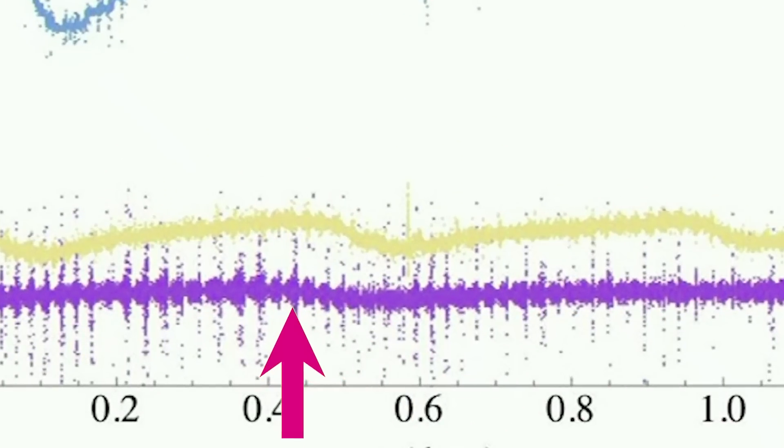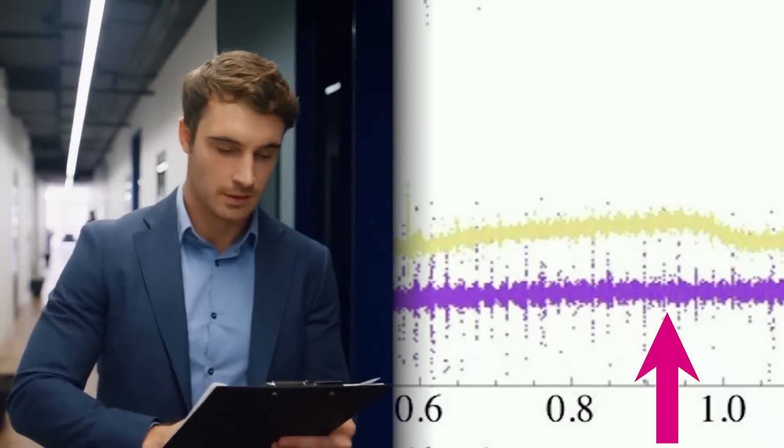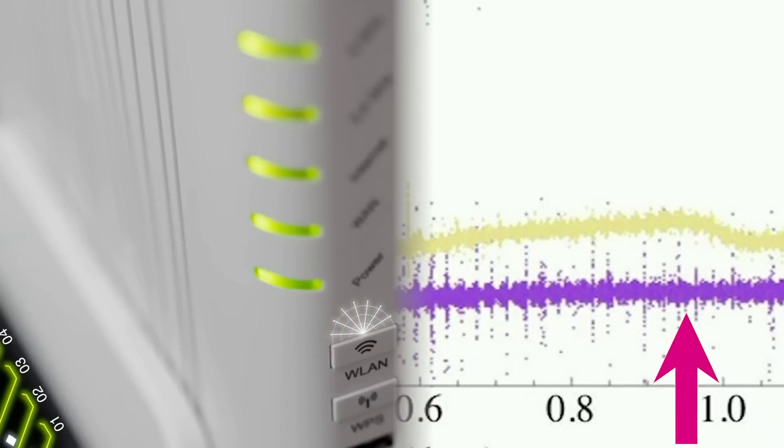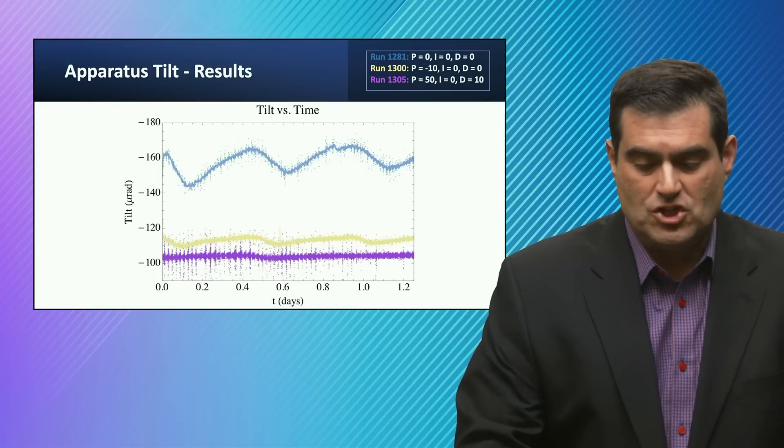You see the little interruptions that look like hash in the data. Those could be from people coming in the building, going out of the building, there's some periodic things. It could be from everything from interference from wifi to other effects that can be filtered out.